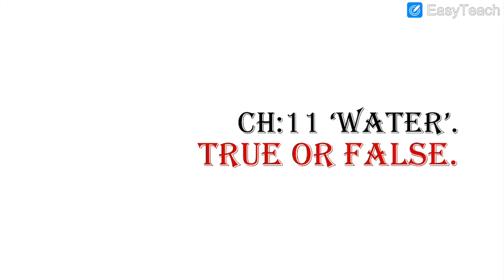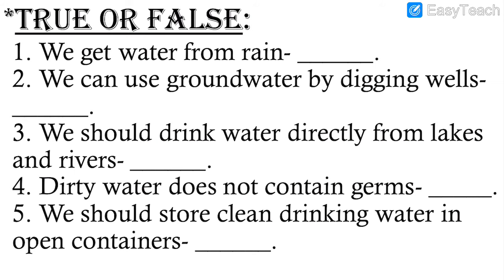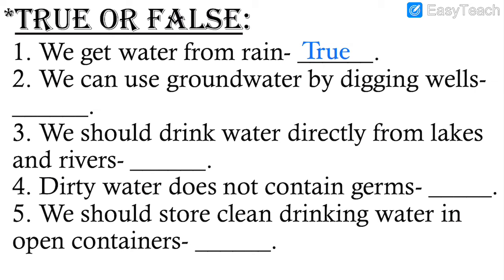Next, chapter number 11, Water. We studied about sources of water, storage of water, drinking water, and saving water. Number one: We get water from rain — this is definitely a correct statement, true. Rain is the most important source of water; rainwater fills up ponds, lakes, and rivers.